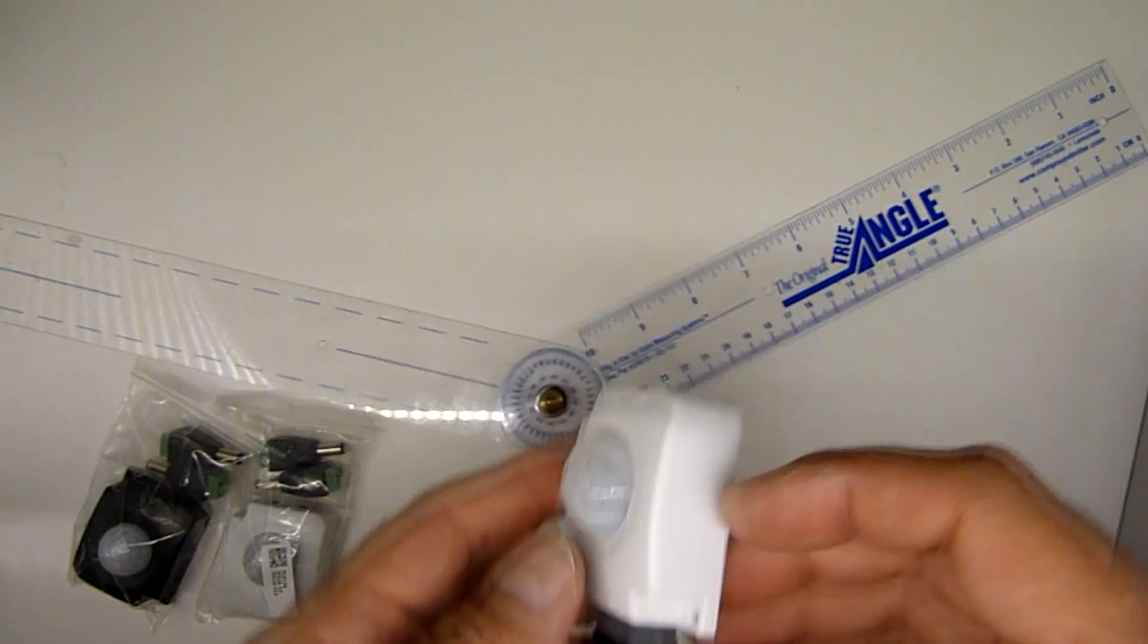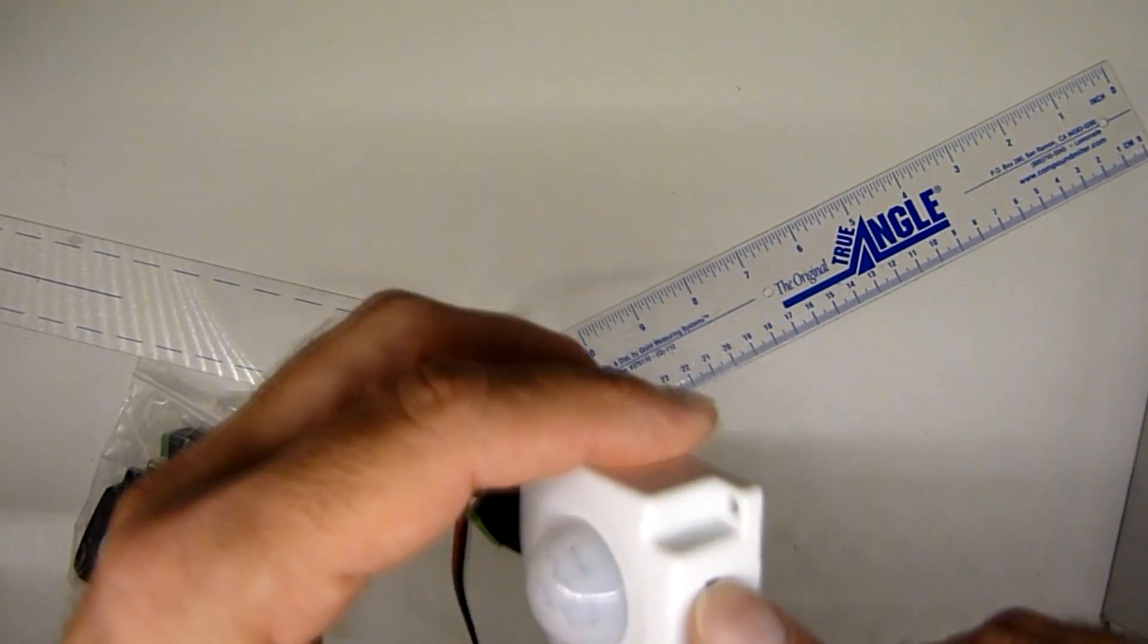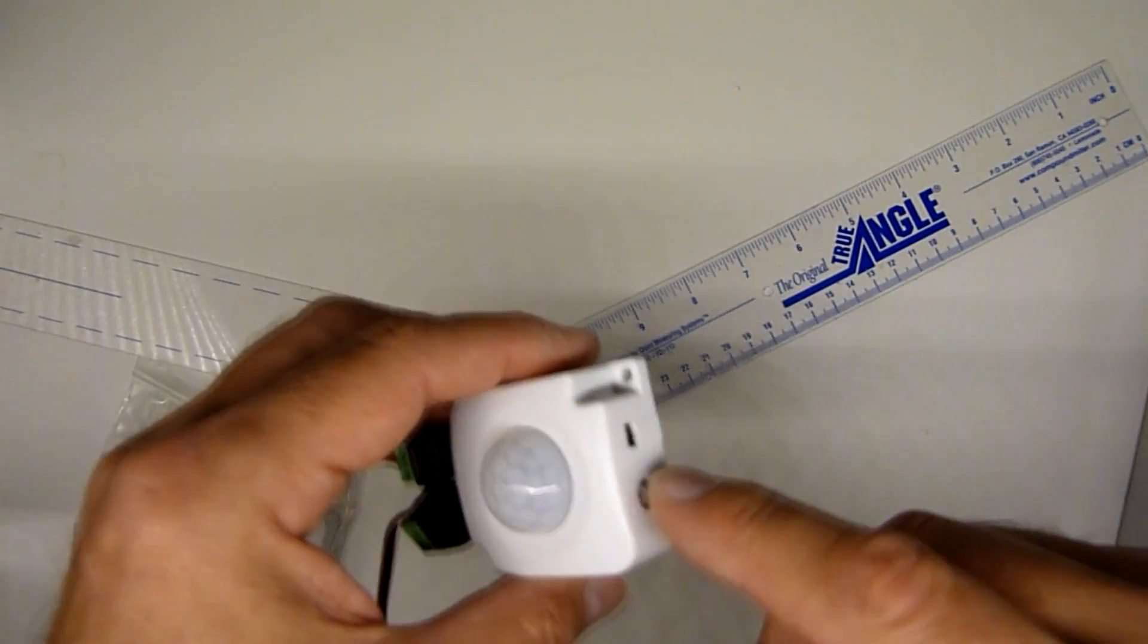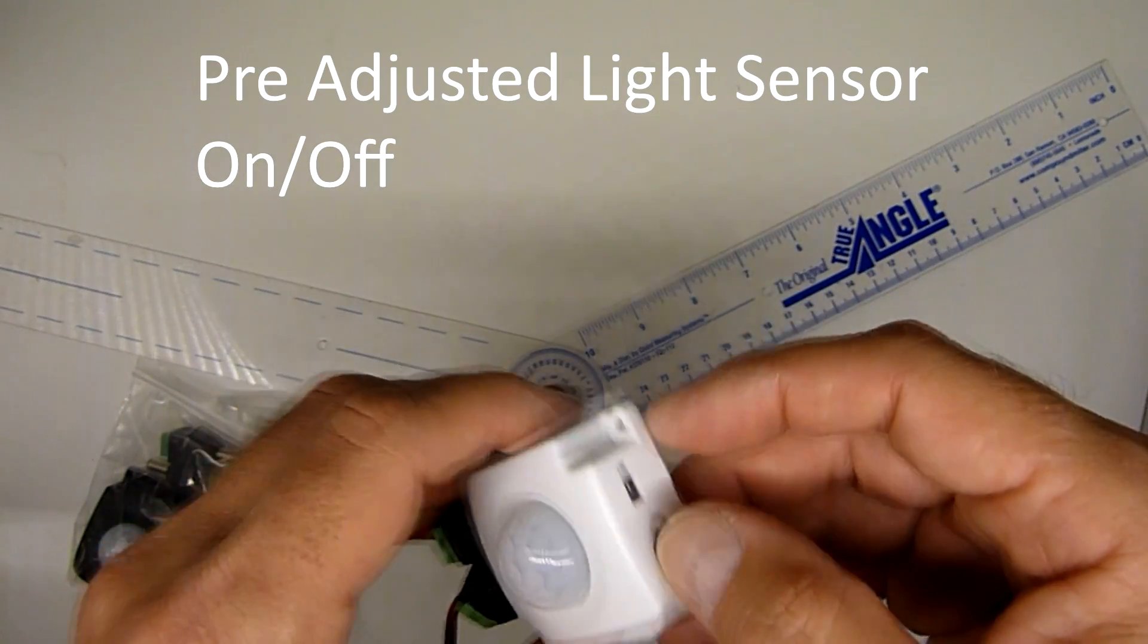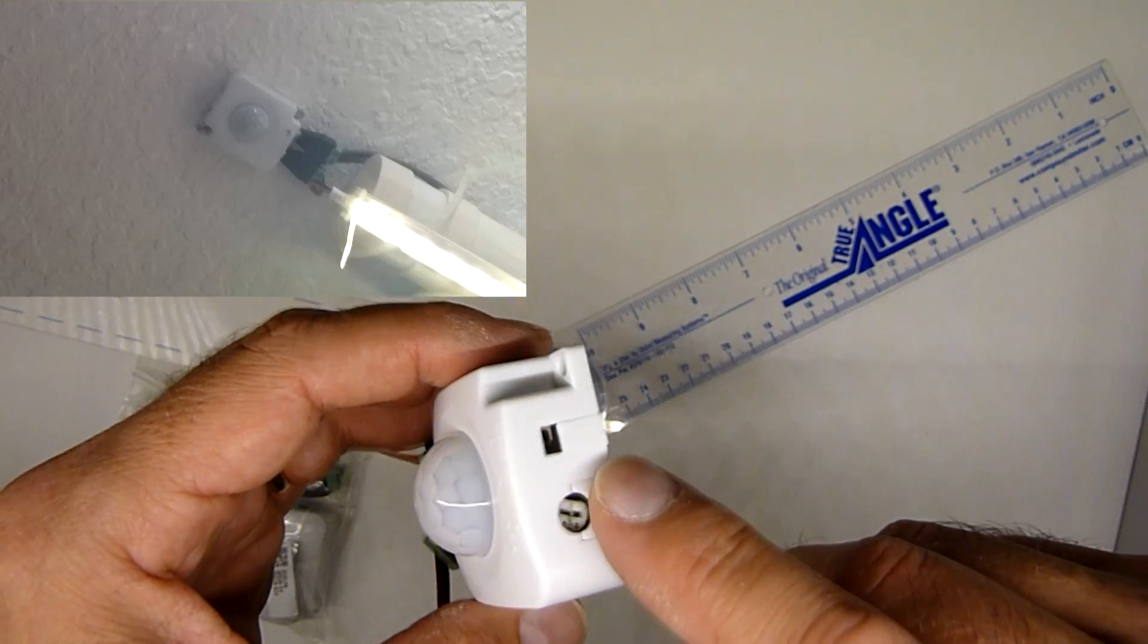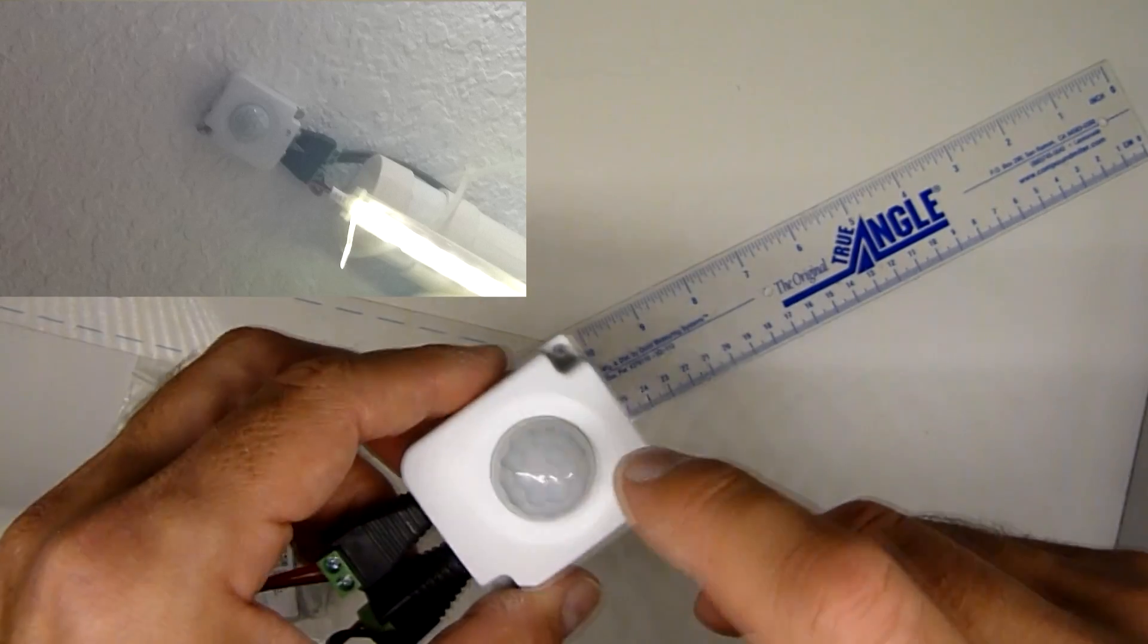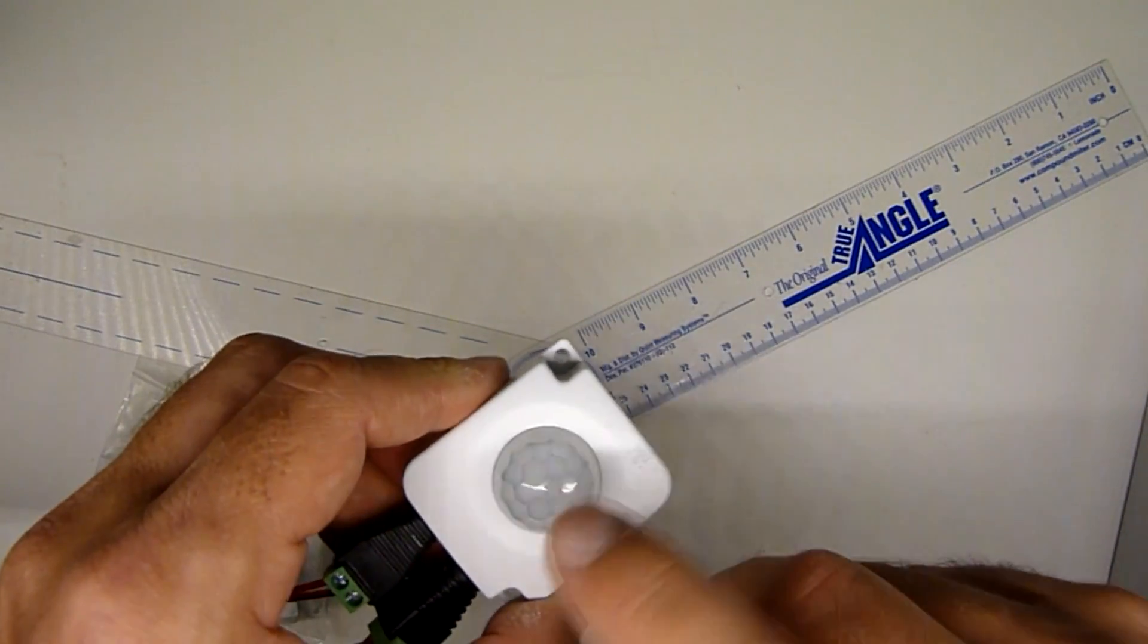Now, the adjustable features on this one, it does have an on-off for light sensor, so it's pre-programmed to illumination. I have one in the garage, and I can tell you when the garage door is open or the indoor light turns on, it's enough to trigger this so it won't activate.